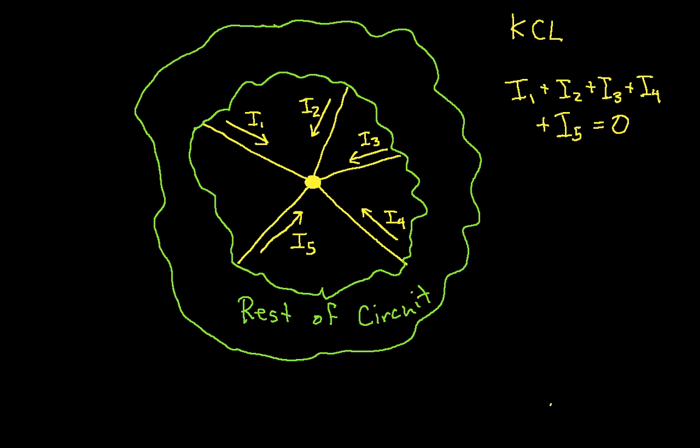Another way of writing KCL, suppose some of the currents are going the opposite direction. So for example, I3 changes direction, we'll assume I4 is still going the same direction, but I5 changes direction. A way I can write KCL for this one is I1 plus I2 plus I4 is equal to I3 plus I5. In words, the sum of the currents entering the node is equal to the sum of the currents leaving the node.